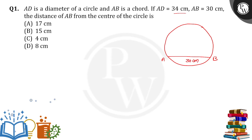AD is the diameter of the circle. We all know that the diameter passes through the circle. If I draw the diameter, the diameter AD is how much? 34 cm. Now, the distance of AB from the center of the circle is how much?